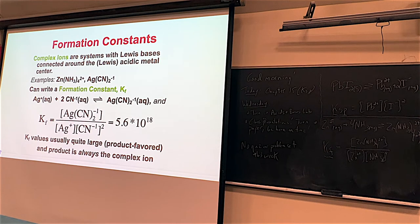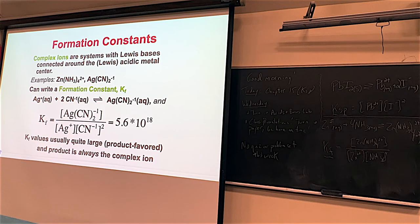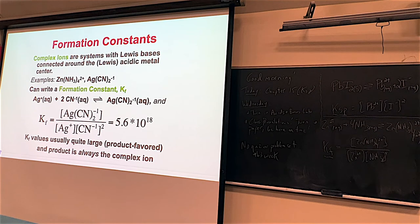The reason we're talking about these is that KF values are usually really, really large — very product-favored — which means they are going to happen. If the KF is possible, it usually happens like gangbusters. The important contrast: in KF expressions, complex ions are products and the reactants are the ions going into them. But with KSPs, the solid is the reactant and whatever ions come out are the products.